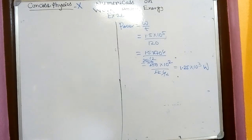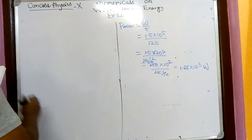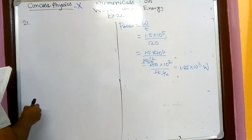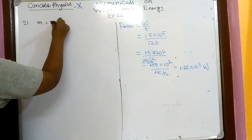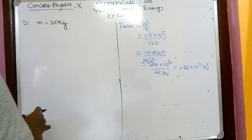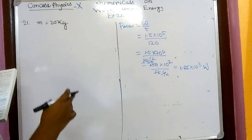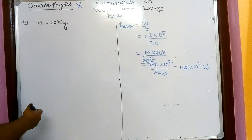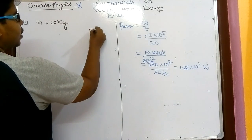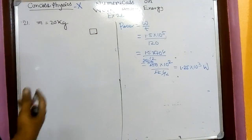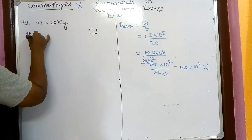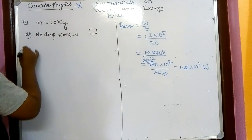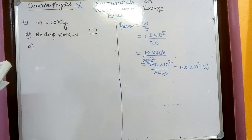Next question: how much energy is gained by a box of mass 20 kg when a man carrying the box waits 5 minutes for a bus? Mass m equals 20 kg. The man just holds the box and waits for the bus — no displacement occurs. For part one, since there is no displacement, work done will be zero.